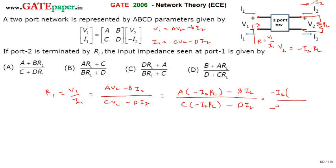If you take minus I2 common from the numerator and denominator, minus I2 gets cancelled. So R1 is equal to ARL plus B divided by CRL plus D.